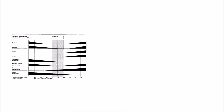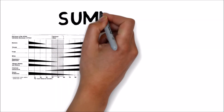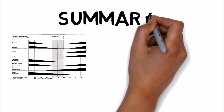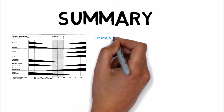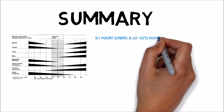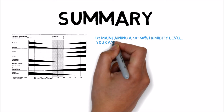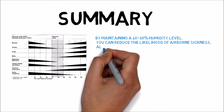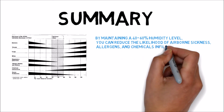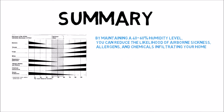As the chart illustrates, there is an optimum humidity zone of 40 to 60 percent relative humidity. By keeping your home in this level, you can help avoid unnecessary sickness, allergies, and chemical interactions.